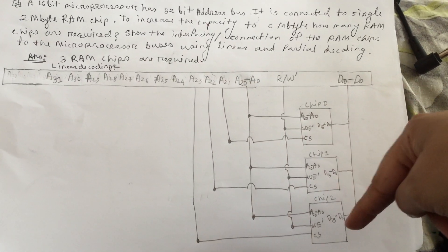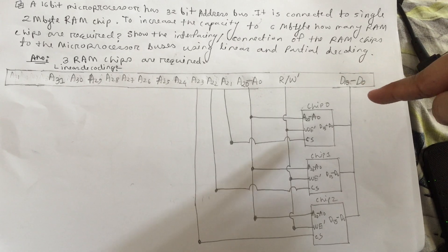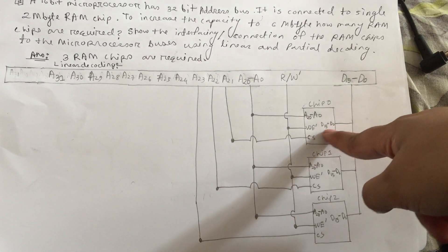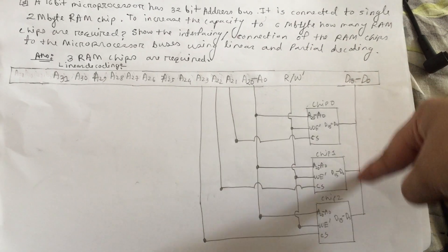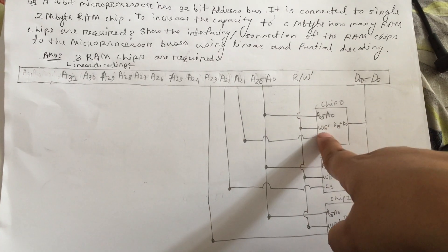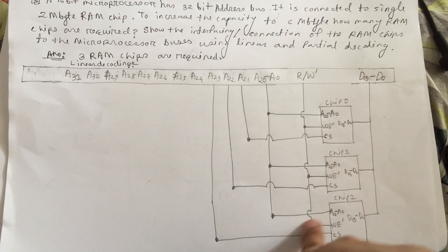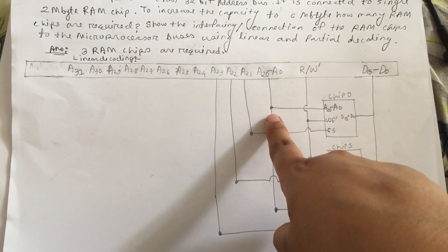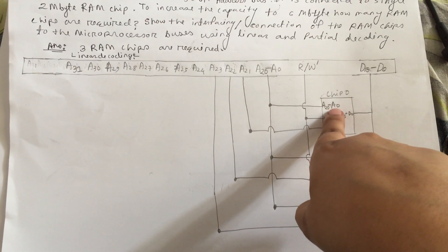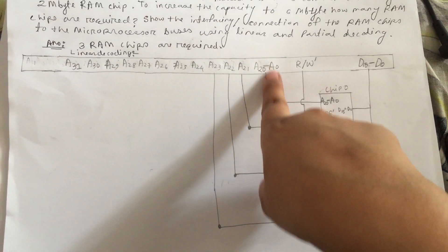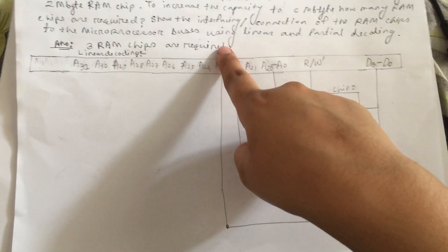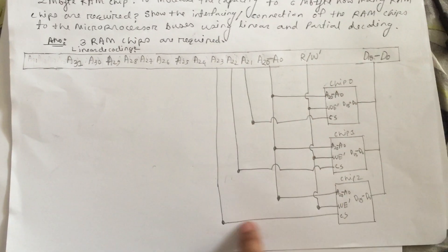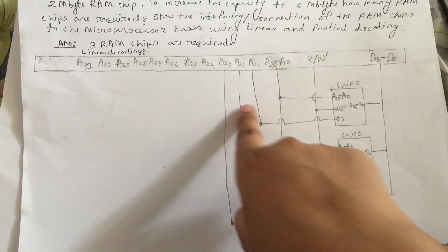There are 3 RAM chips, so I have connected d0 to d15 with each. Read and write operations are going to WE bar. These are connected, and from a20 to a0 is going to these pins. These 3 pins are going to chip select pin, so I have selected the chips.